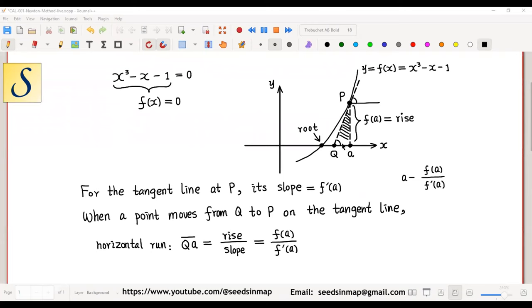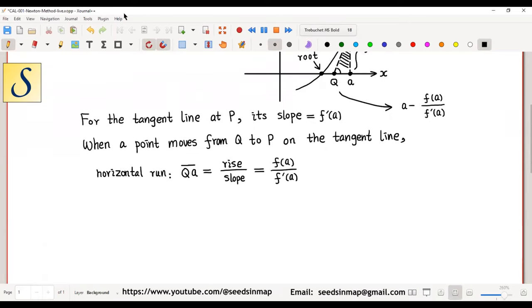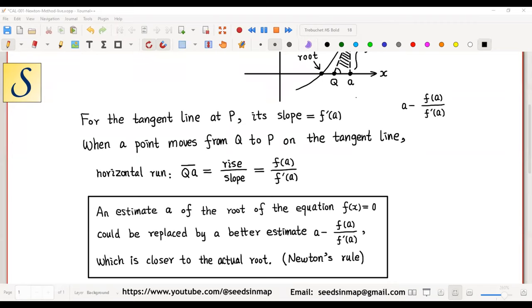So, the x-intercept of the tangent line is a - f(a)/f'(a). We see from the above that an estimate a of the root of the equation f(x) = 0 could be replaced by a better estimate a - f(a)/f'(a), which is closer to the actual root. This rule is called Newton's rule.